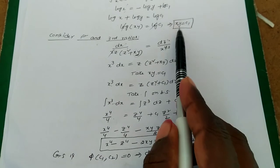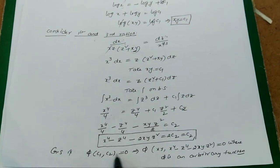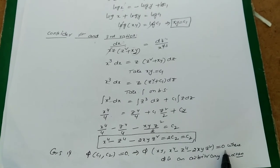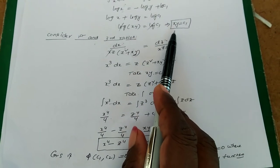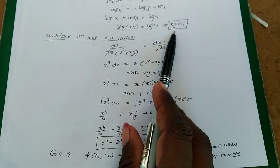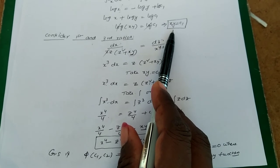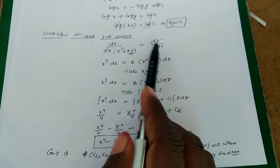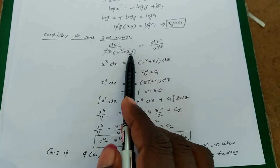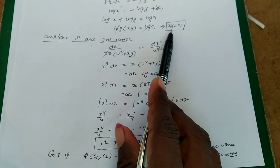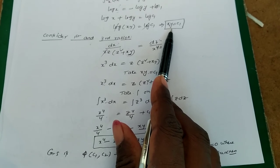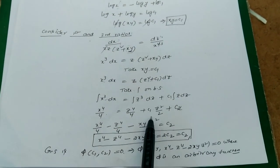After finding two linearly independent solutions we write the general solution phi of c1 comma c2 equal to 0, where phi is an arbitrary function. In this problem, the first solution was found directly by grouping, but to find the second solution it was not possible to eliminate y from the fractions directly. So we eliminated y by substituting the first linearly independent solution, then found the second solution.